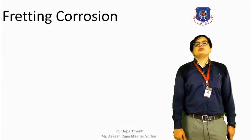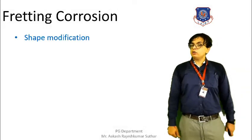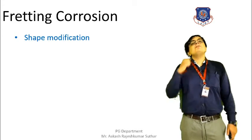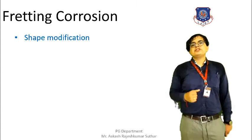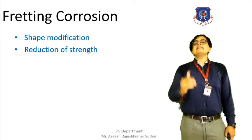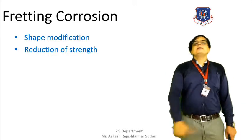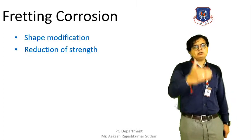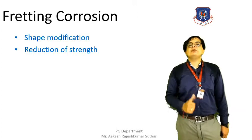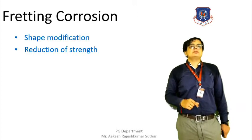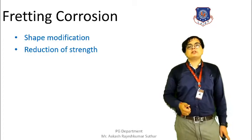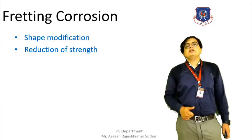The side effects of fretting corrosion include shape modification of the equipment or part. The load-taking capacity of the machine or part where fretting corrosion has occurred is reduced. It will not be able to take excessive load, and its strength and load-taking capacity are reduced. This was fretting corrosion.